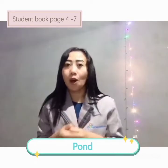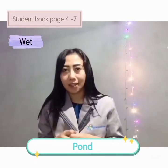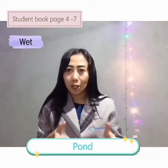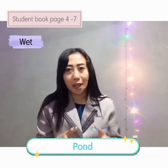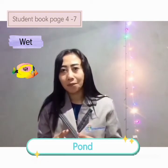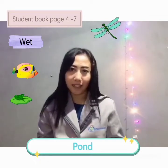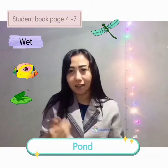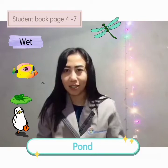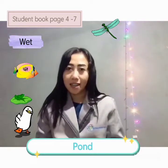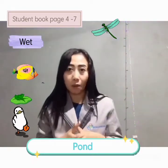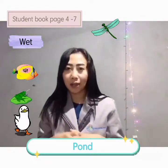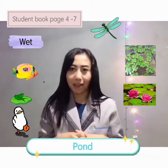The environment of the pond is wet. The animals that live in the pond, for example, fish, frog, dragonfly, duck, and etc. And the plants that live in the pond, for example, duckweed and water lily.